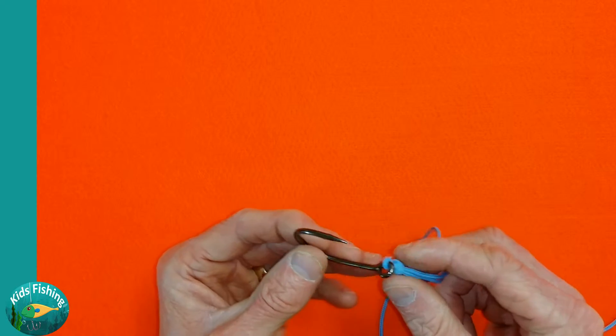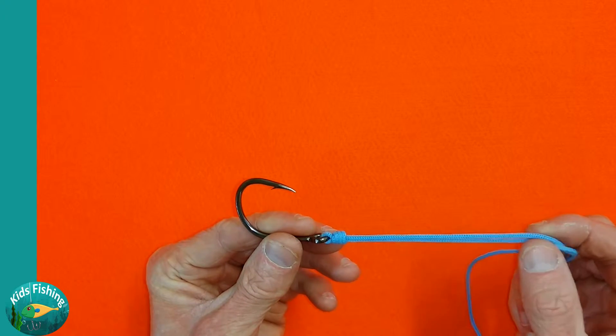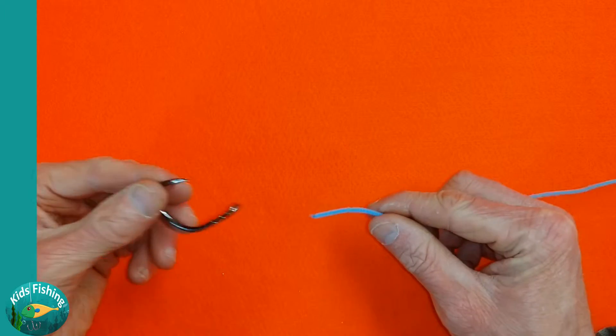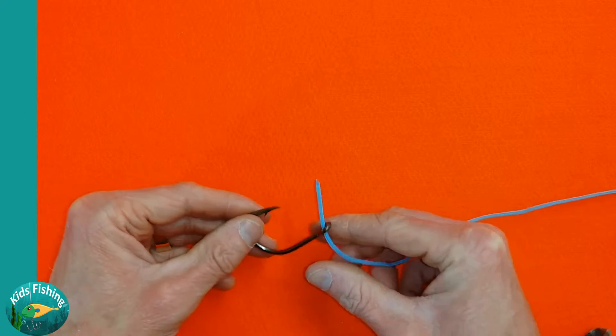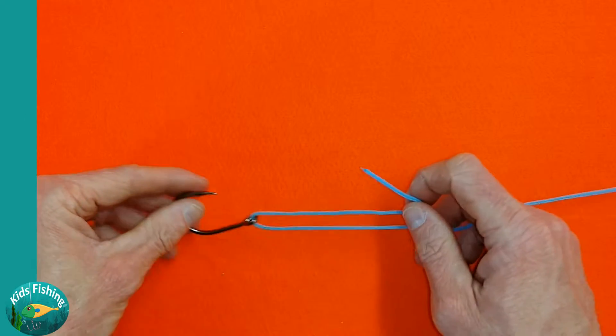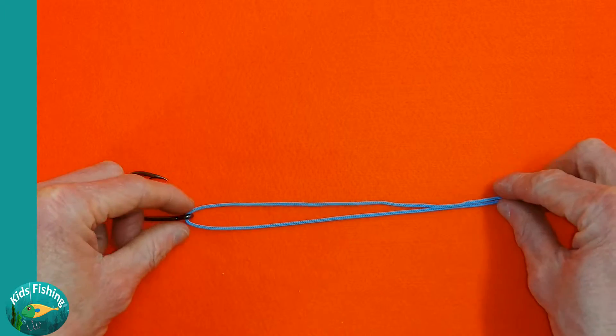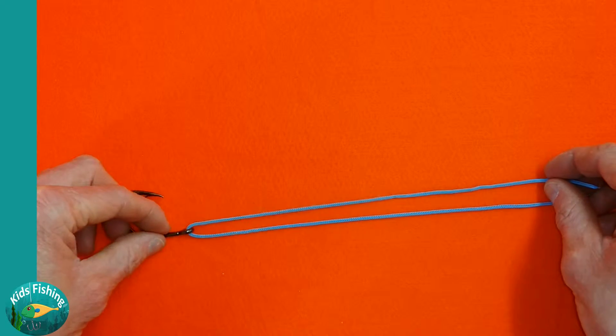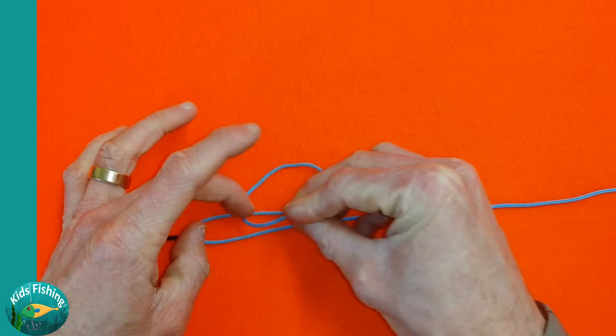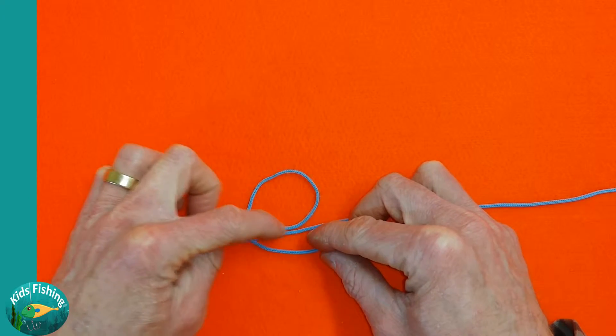Let's look at how to tie a uni knot. Here we have a fish hook and our line, and we're just going to thread the line through the hook and pull the tag end down and create some overlap. Now the most important thing is to create a loop and to make sure that we do the loop in the right direction. So here we have the loop and we've created an overlap between the main line and the loop.